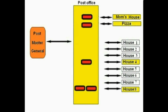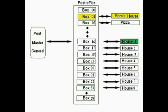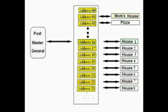The problem arises when multiple houses send multiple letters to the post office — the postmaster doesn't know which letter came from where. His solution? He created post office boxes. Each house is assigned an individual box. Now when a letter is found in a box, the postmaster knows exactly where that letter came from. To translate this back into computer talk, we replace the PO boxes with addresses.